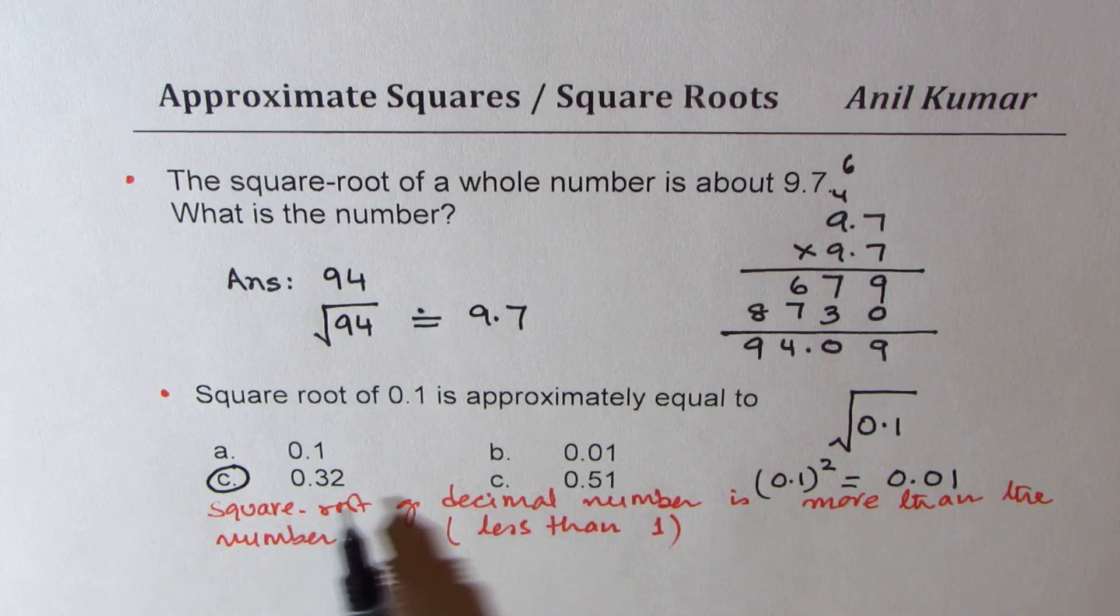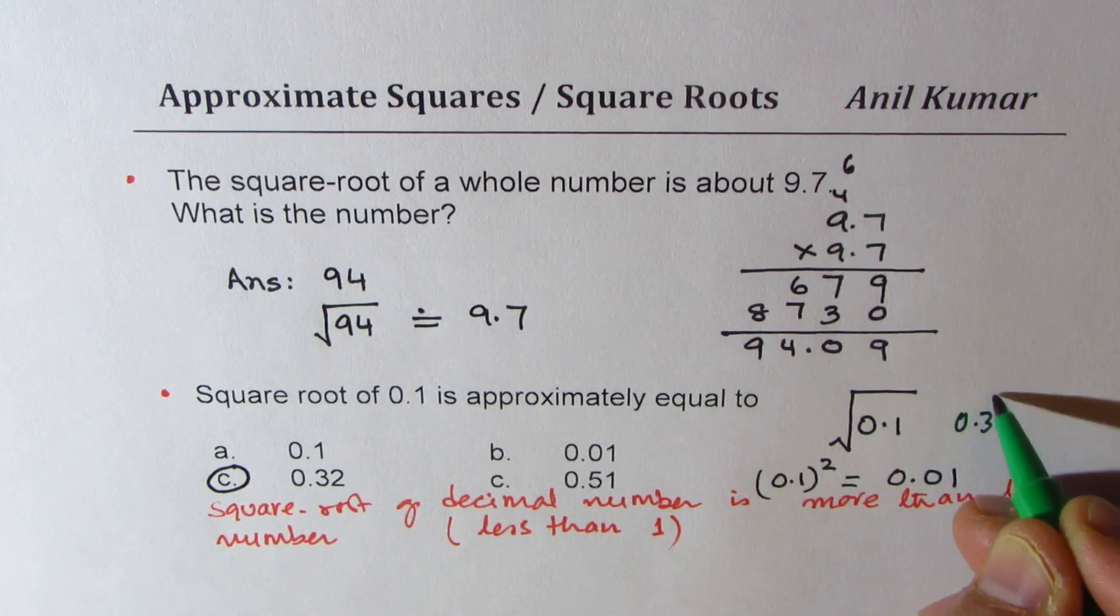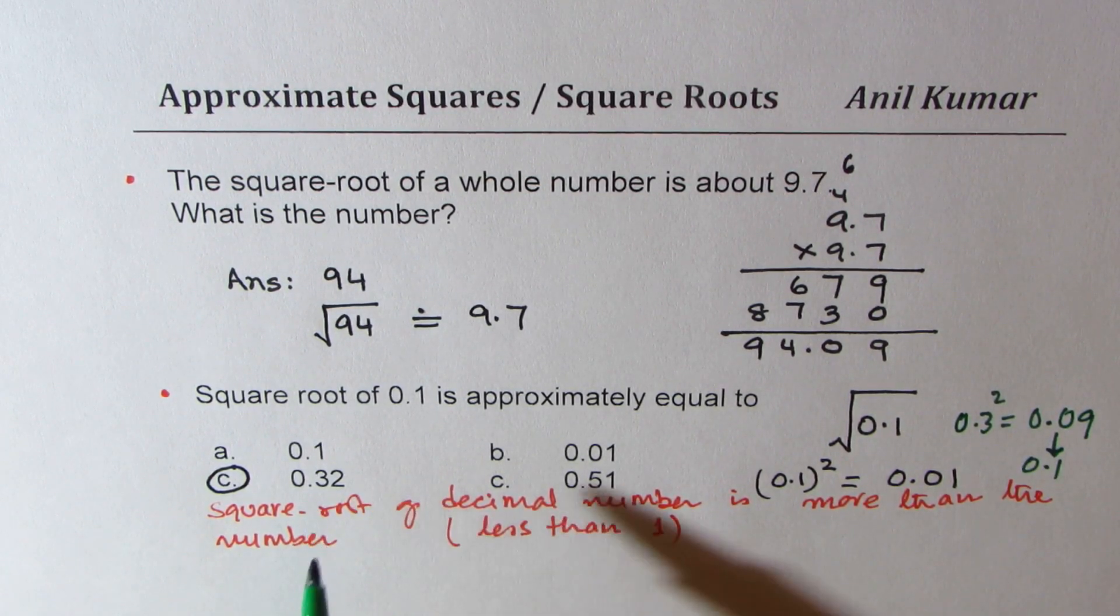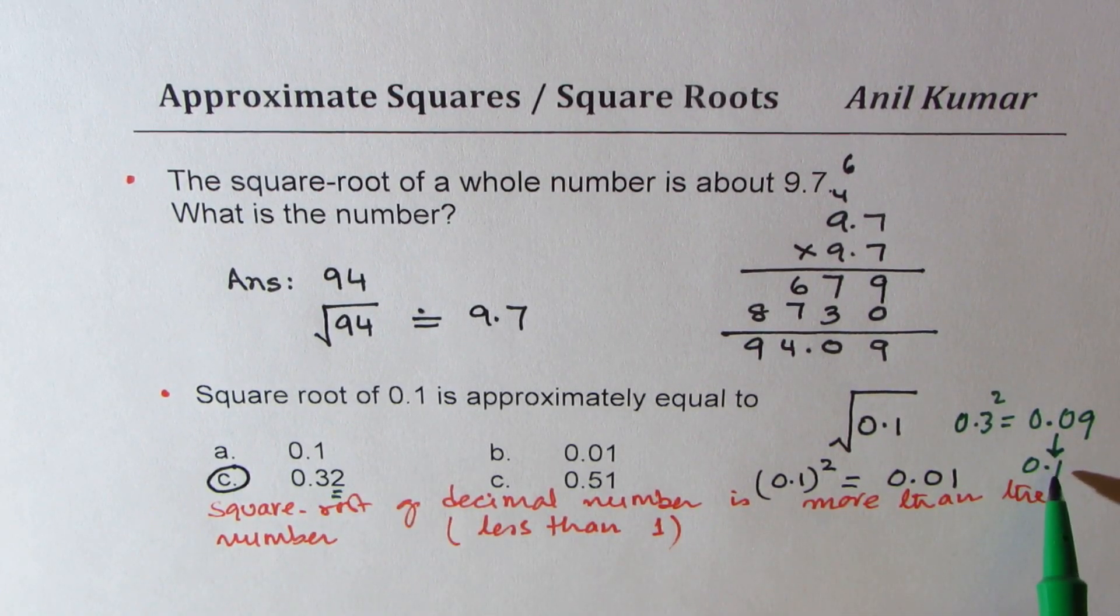You can actually approximate and get 0.3 squared is 0.09, which is very close to 0.1. And since it is higher than 0.3, so you really get an answer which is close to 0.1.